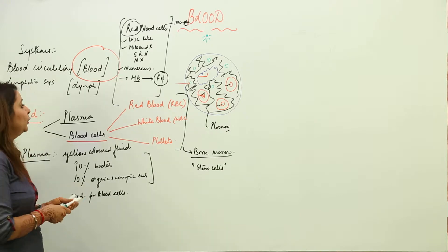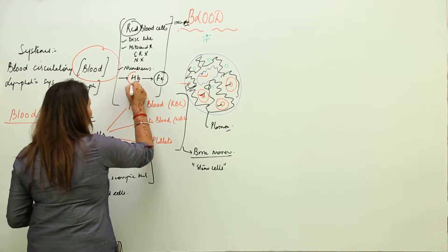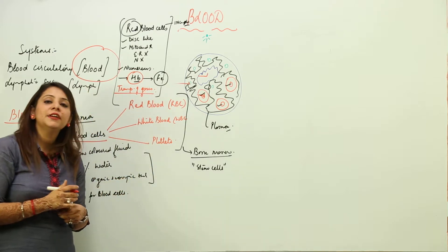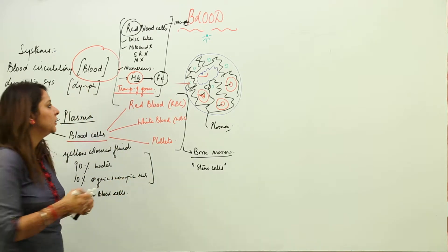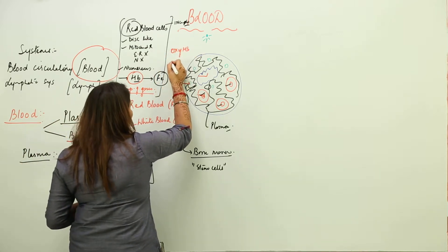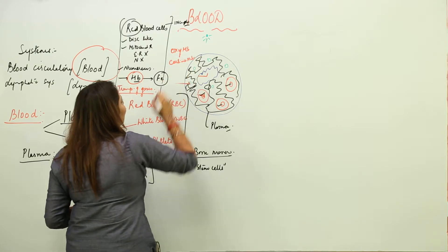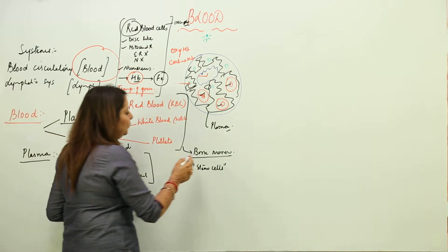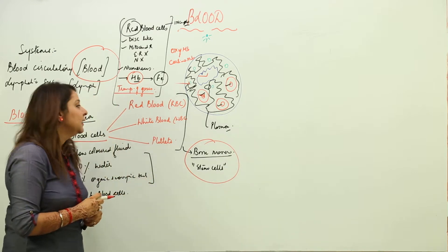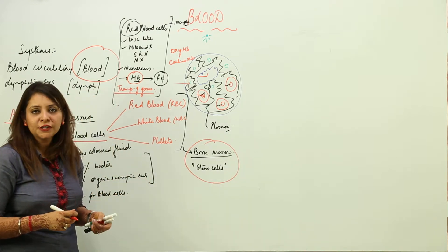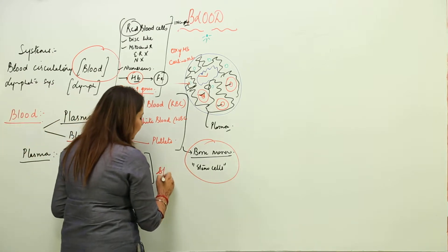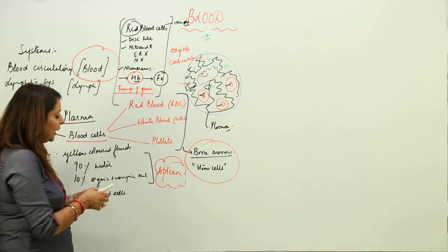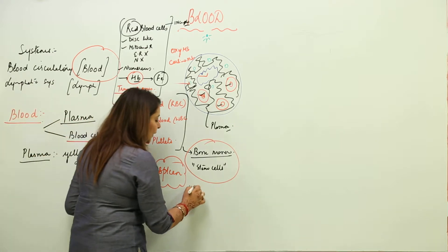Hemoglobin performs an important function — it helps in the transportation of gases. Whenever hemoglobin transports oxygen, it forms an oxy-hemoglobin complex, and when it transports carbon dioxide, it forms a carbino-hemoglobin complex. RBCs are formed in bone marrow from stem cells. In infants, since bone marrow is not properly developed, they are formed in the spleen.